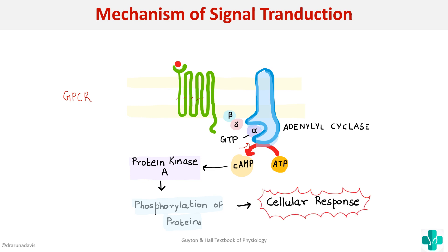So this is how cyclic AMP acts as a messenger. The hormone bound onto the receptor forming the hormone receptor complex, which activated the GPCR causing changes to the G proteins. This activated adenylyl cyclase, which converted ATP to cAMP, which activated protein kinase A, causing phosphorylation of proteins and producing a cellular response. Indirectly, this hormone was able to produce a cellular response.